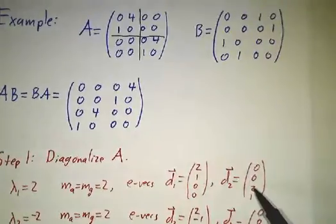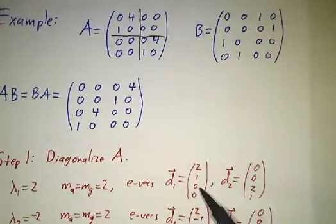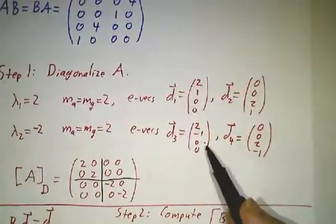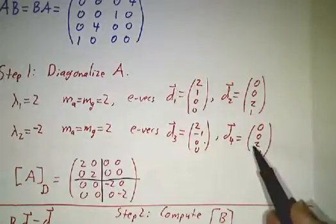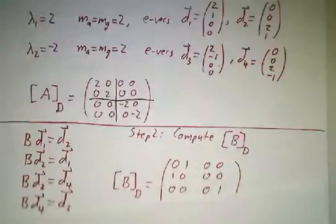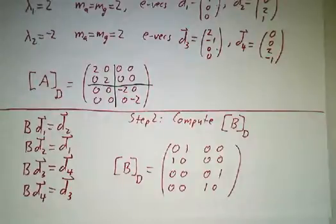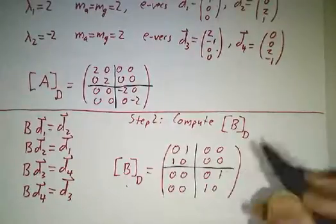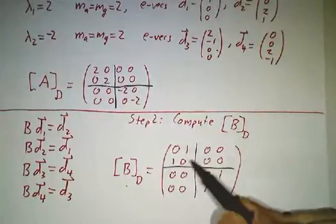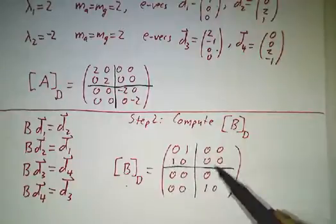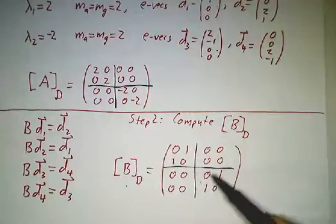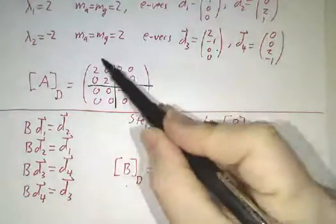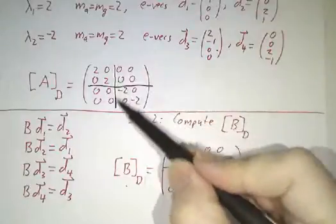Likewise, B multiplied by D2 gives you exactly D1. B times D3 gives you D4. B times D4 gives you D3. So that means that the matrix of B in the D basis takes this form. Which again, it's blocks. So this is our block B1. This is our block B2. And it corresponds to this twice the identity and minus twice the identity.